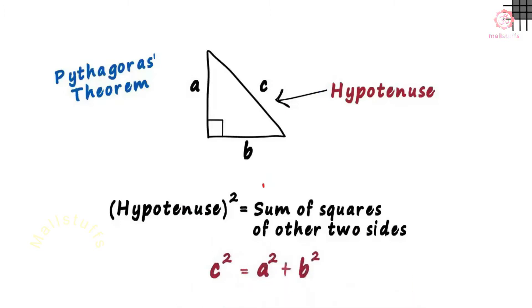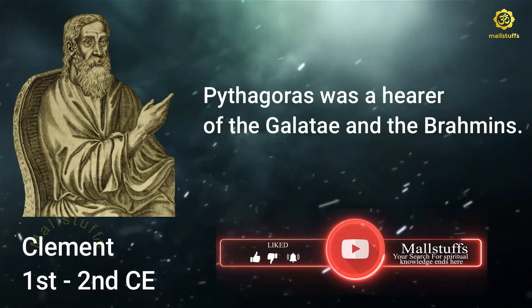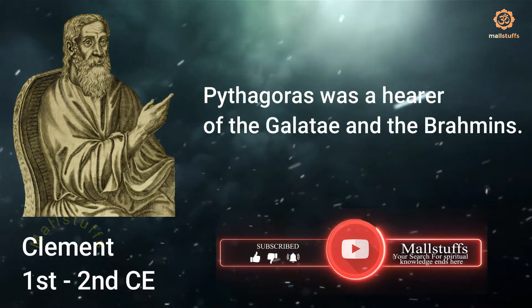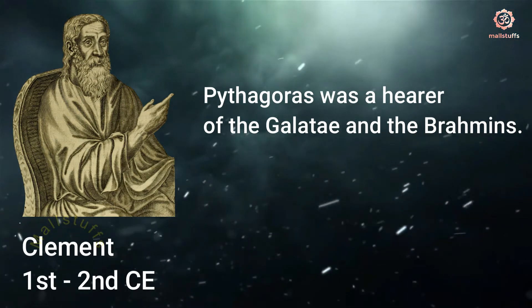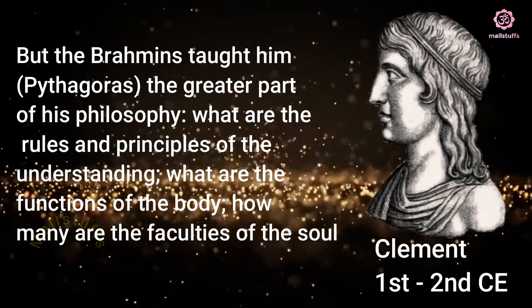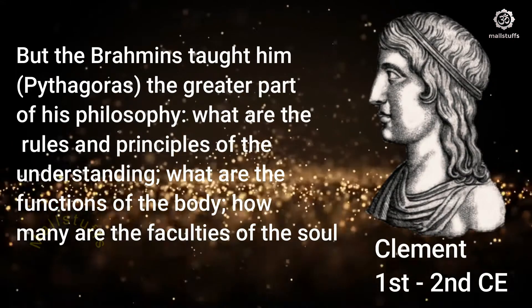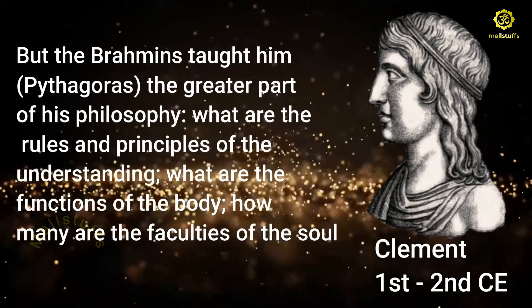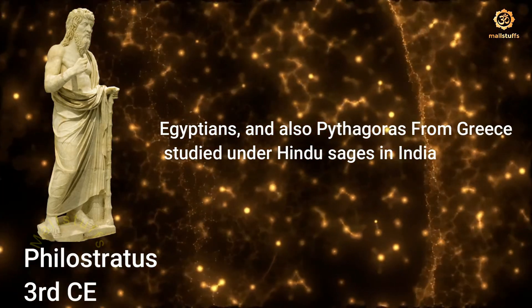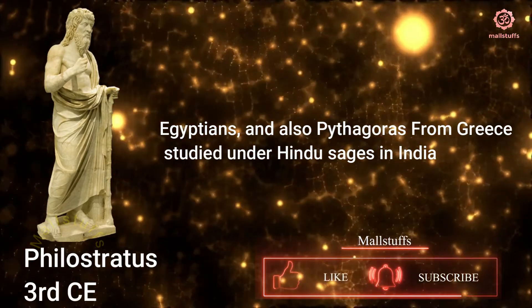Such a claim is not made by Indians — it was actually told by ancient Greeks themselves. Clement of Alexandria, hailing from Greece and belonging to the 1st to 2nd century CE, in his book Stromata said Pythagoras was a hero of the Brahmins. Similarly, another Greek philosopher from the 1st to 2nd century, Apollonius, in his work Florida said Brahmins taught Pythagoras the greater part of his philosophy. Another Greek philosopher, Philostratus, belonging to the 3rd century CE, in his work The Life of Apollonius said that the Egyptians and also Pythagoras studied under Hindu sages in India.